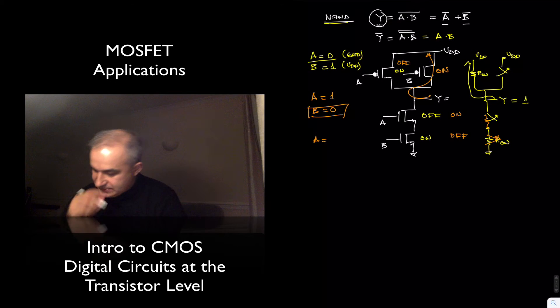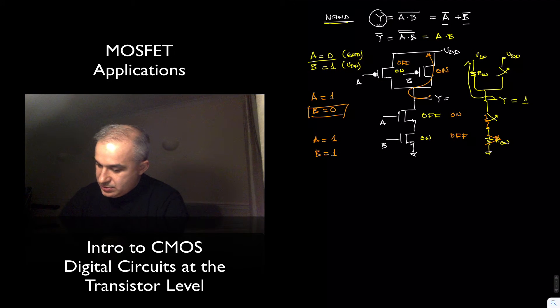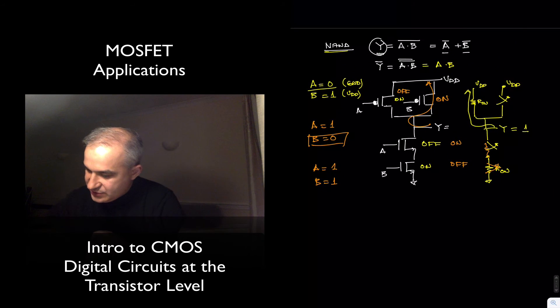Or A equals 1, B equals 1. In this case, we have that, actually, let's do it in another color. So A equals 1, B equals 1, what do we have? On, on, off, off. So now we have closed both switches, Y is equal to zero.